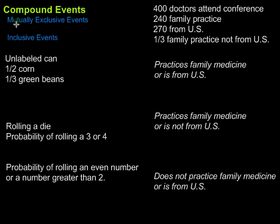Inclusive events are when there is some overlap and we have to account for that overlap. In the same example of rolling dice, if we had the probability of rolling a two or the probability of rolling an even number, well two is also even, so we have to account for that. We pull out the two so that we don't count it twice and get a true probability.